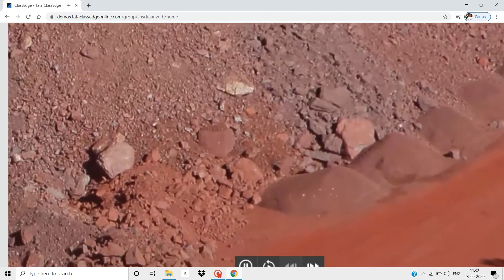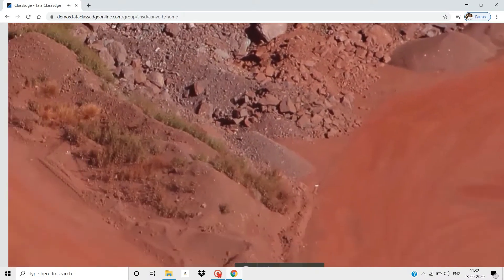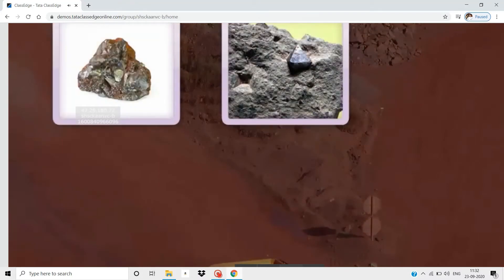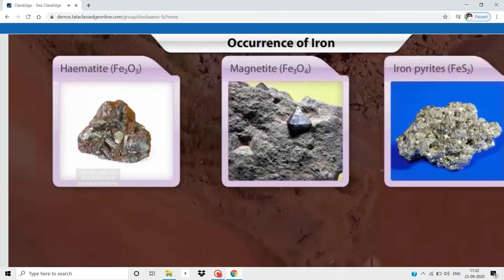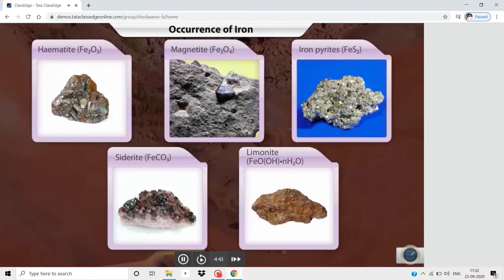Iron is mined from the earth's crust in its combined state as an ore. Hematite, magnetite, iron pyrites, siderite, and limonite are the most important ores of iron.